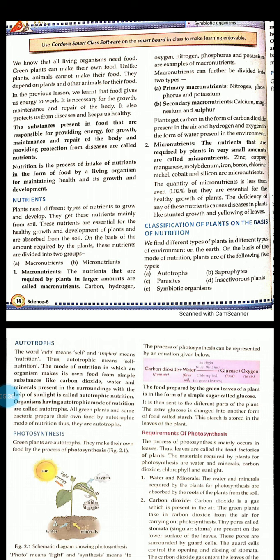Primary macronutrients include nitrogen, phosphorus and potassium. Secondary macronutrients include calcium, magnesium and sulfur. Plants get carbon in the form of carbon dioxide present in the air, and hydrogen and oxygen in the form of water present in the environment.